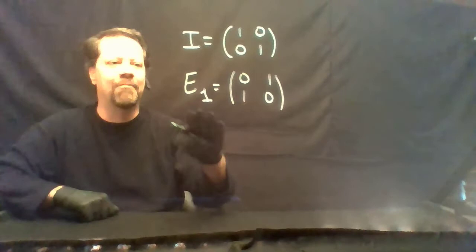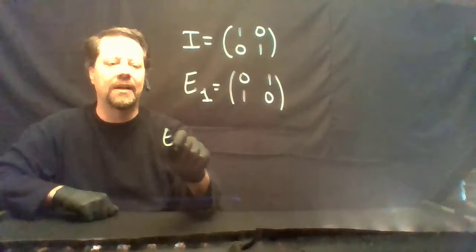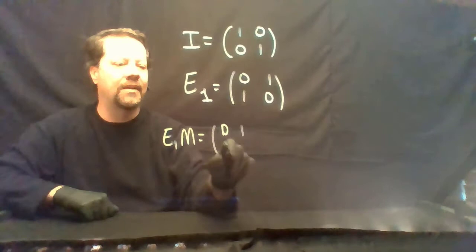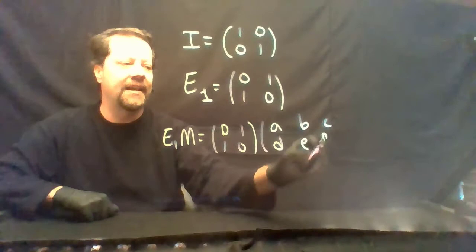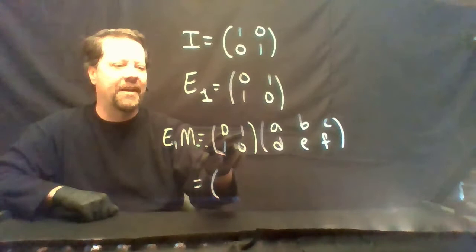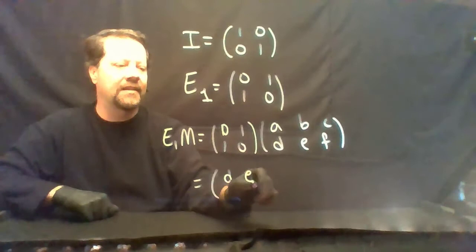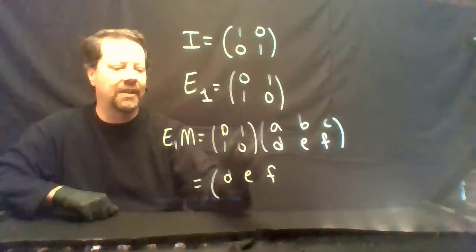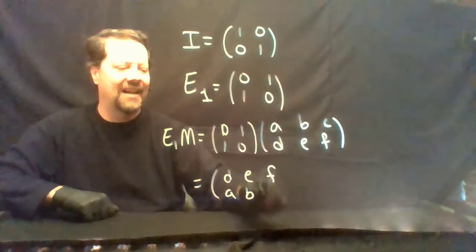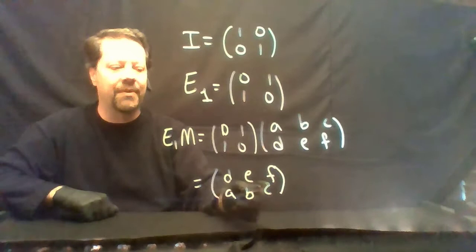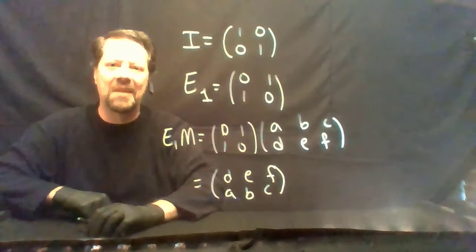Now let's look at the effect of multiplying another matrix by E1. Take E1 = [0 1; 1 0] and multiply it by [a b c; d e f]. When we multiply by the first row, we pick up D, E, and F. When we multiply by the second row, we get a, b, and c. We can accomplish the elementary row operation of interchanging the two rows of matrix M by multiplying by the elementary matrix E1.